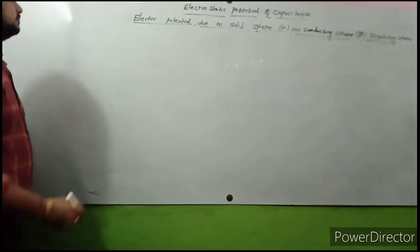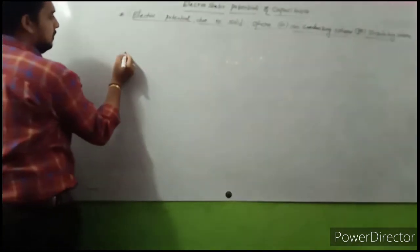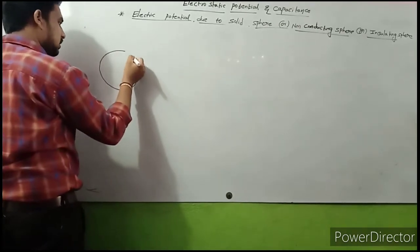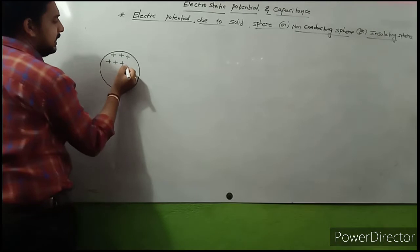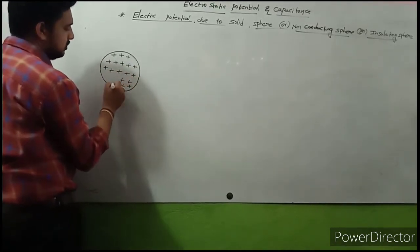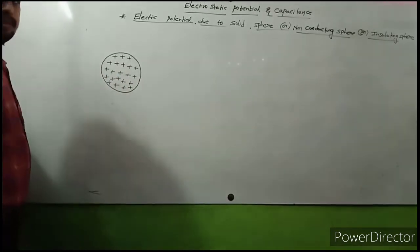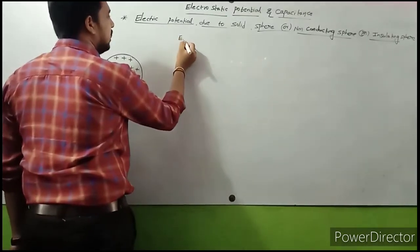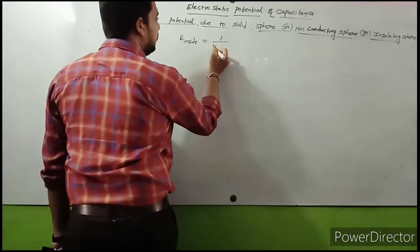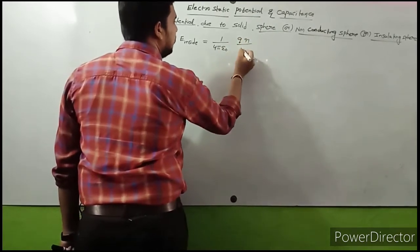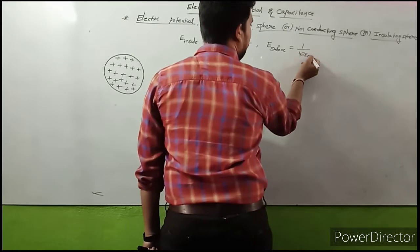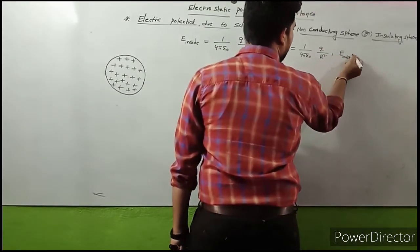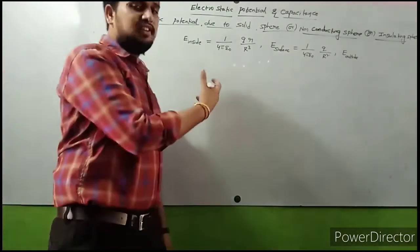Electric potential due to a non-conducting insulating solid sphere. A solid sphere means charges are present and distributed inside the solid sphere — charge inside is not equal to zero. First, write the general formulas: E inside = (1/4πε₀) × qr/R³; E surface = (1/4πε₀) × q/R²; E outside = (1/4πε₀) × q/r².